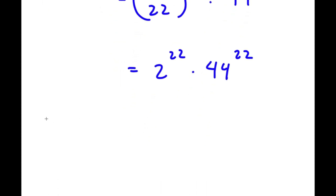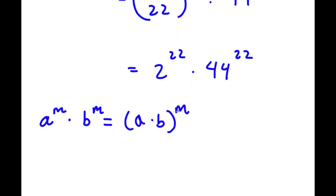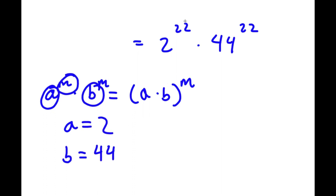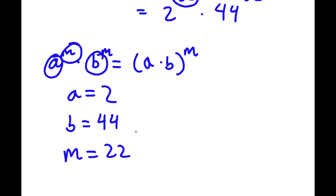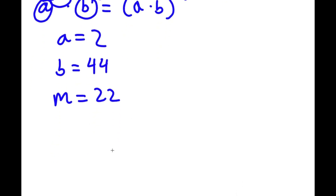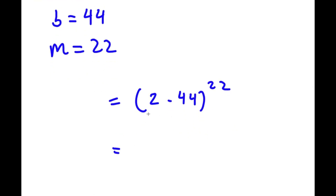Using the rule a to the power of m times b to the power of m equals a times b to the power of m, I have 2 to the power of 22 times 44 to the power of 22, where a is 2, b is 44, and m is 22. This equals 2 times 44 to the power of 22. Since 2 times 44 is 88, my final answer is 88 to the power of 22.